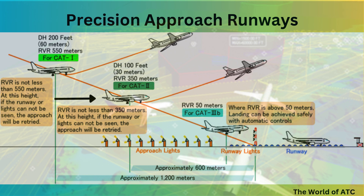If the runway is CAT-2, he will continue until a height of 100 feet. If he gets visual he will continue the approach; if he is still not visual at this height, he will take the decision to go around. The same applies for CAT-3 Alpha, Bravo, and Charlie as already described.